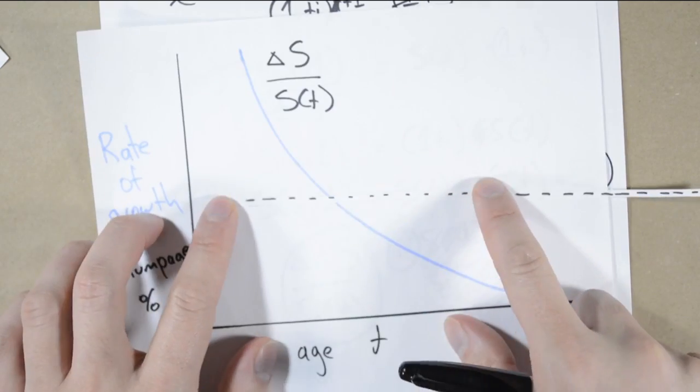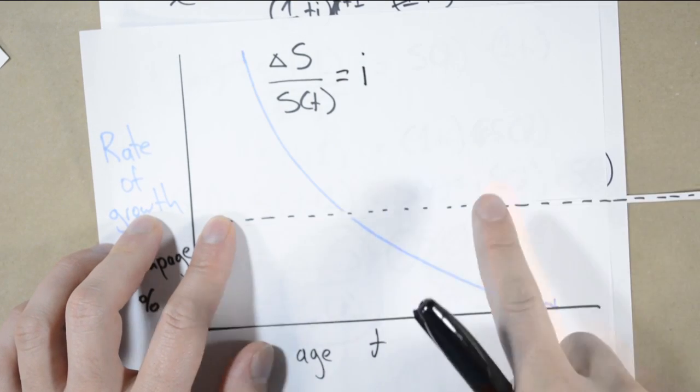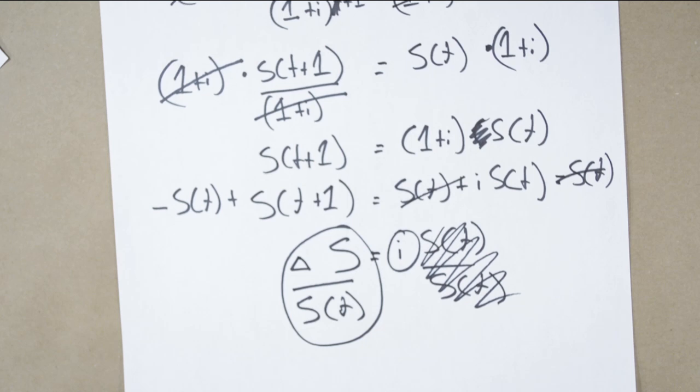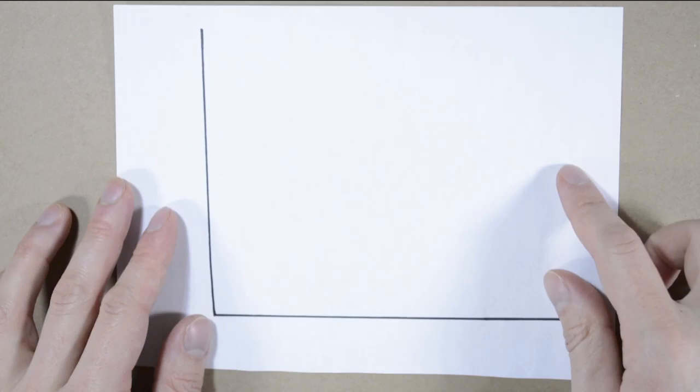It was our exact same criteria for getting the optimal rotation age before. So whether we discount every year and find the highest net present value, or compare the growth rates of the costs and the benefits, they're both ways of accounting for the opportunity cost.